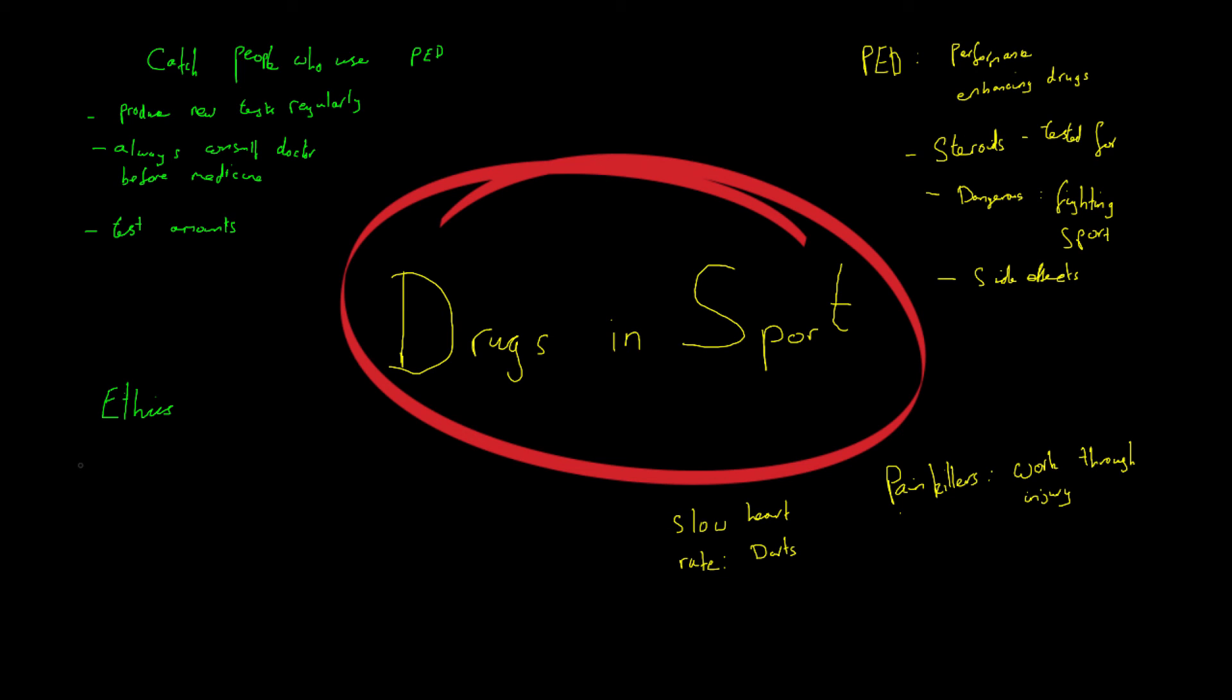However, a counter argument to that is that some people naturally will produce more of a certain substance which gives them an advantage. Some people naturally, by genetics, can put on muscle mass more than other people. So is that fair? Should those people who cannot be allowed to take substances which allow them a level playing field? That actually is a counter argument. If you're given a question, you need to be able to distinguish the for and against arguments for drugs in sports.